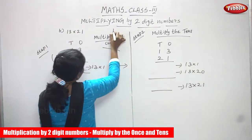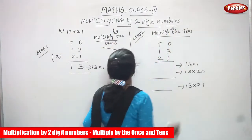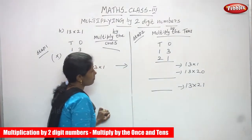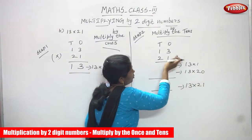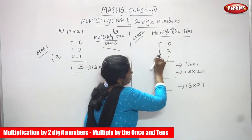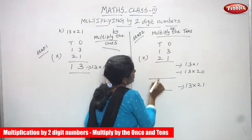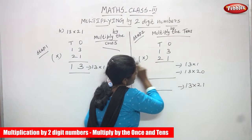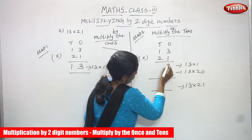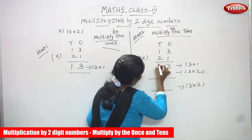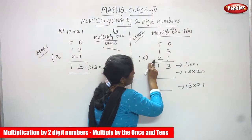Multiply by the ones, and also multiply by the tens. So again you have to write the ones place and tens place value first. 13 into 21 — you are going to multiply. Already I have multiplied the ones, so the answer is: 1 times 3 is 3 and 1 times 1 is 1. Then I'm going to multiply by the tens, so I've written the heading: Step 2, multiplying by the tens.